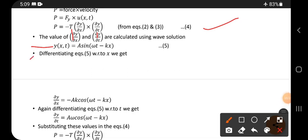Differentiating equation 5 with respect to x, so A as it is, and sine becomes cos. With respect to x means the x component is -k, so minus and k are taken outside.